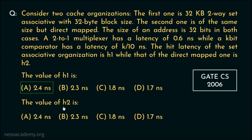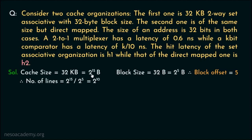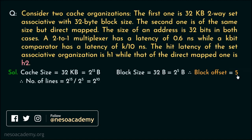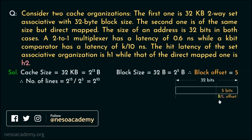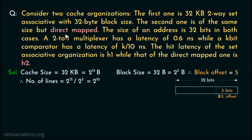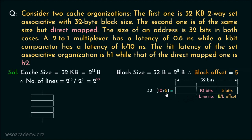Now let's find H2. The cache size is 2^15 bytes, block size is 2^5 bytes, so block offset is 5 bits, and the number of cache lines is 2^10. This organization is direct mapped, so 10 bits are used for the line number. The tag bits are 32 − 10 − 5 = 17 bits, meaning 17-bit tags are associated with all 2^10 cache lines.